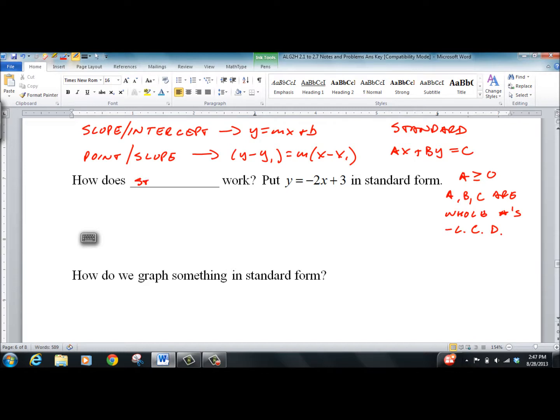So, how does standard form work? We'll put this in standard form. Y equals negative 2x plus 3. Add the 2x over. 2x plus y equals 3. A equals 2. B equals 1. C equals 3.